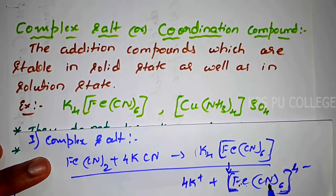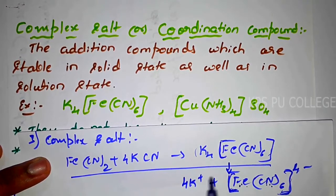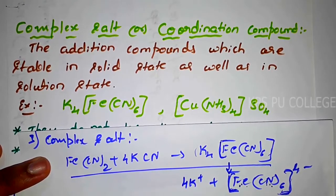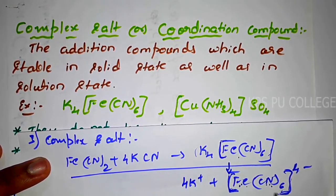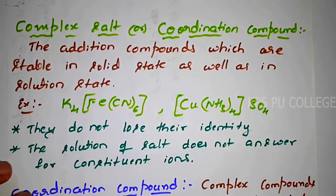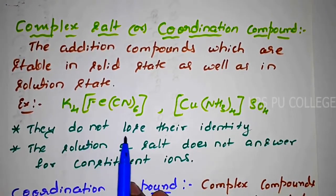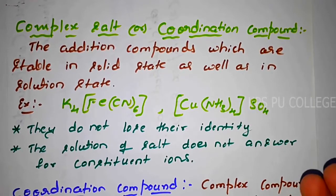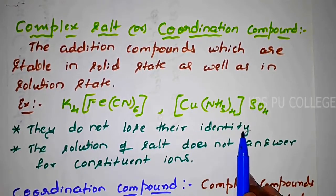In the complex ion, the metal and the ligand are held together by a coordinate bond — Lewis acid and Lewis base interaction. So coordination compounds are stable in both solid state and solution state. They retain their identity when dissolved in water because free ions are not formed from the complex ion.